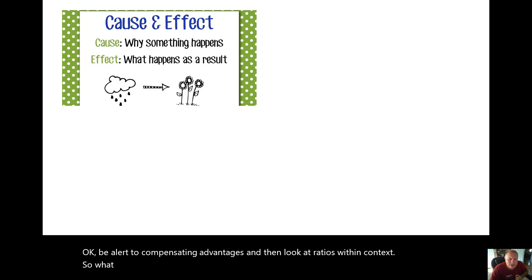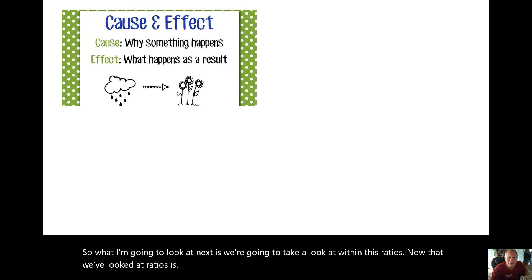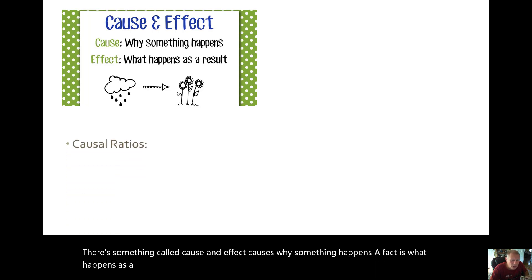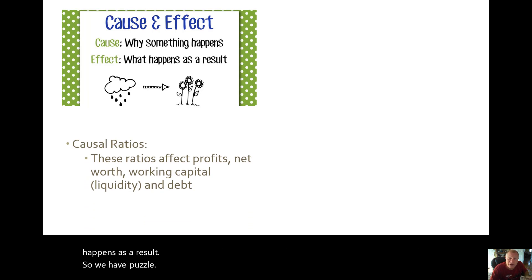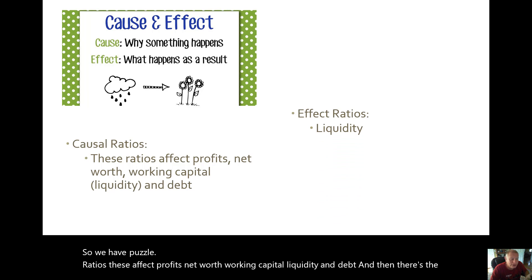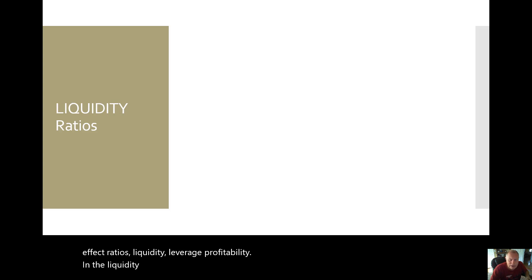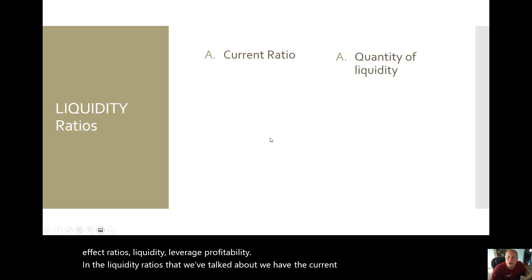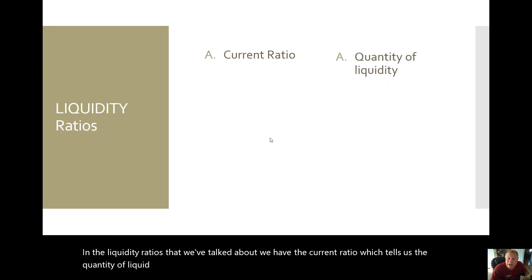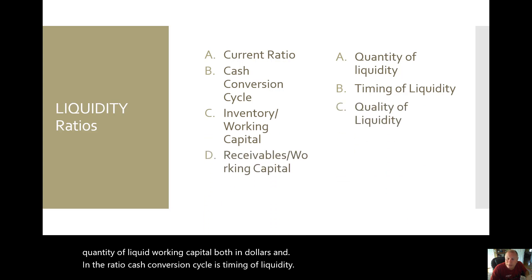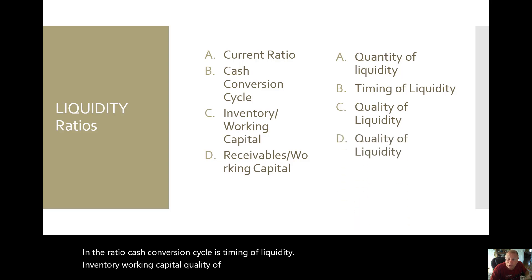Next, within this discussion of ratios, there's something called cause and effect. Cause is why something happens; effect is what happens as a result. We have causal ratios — these affect profits, net worth, working capital, liquidity, and debt. Then there are effect ratios: liquidity, leverage, and profitability. In the liquidity ratios we've talked about, the current ratio tells us the quantity of liquidity — working capital in both dollars and ratio form. The cash conversion cycle is the timing of liquidity. Inventory to working capital and receivables to working capital both reflect the quality of liquidity.